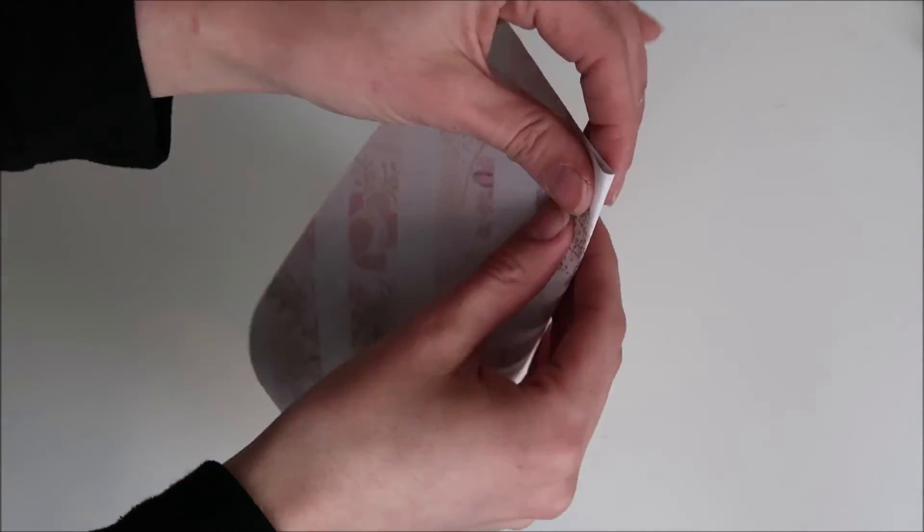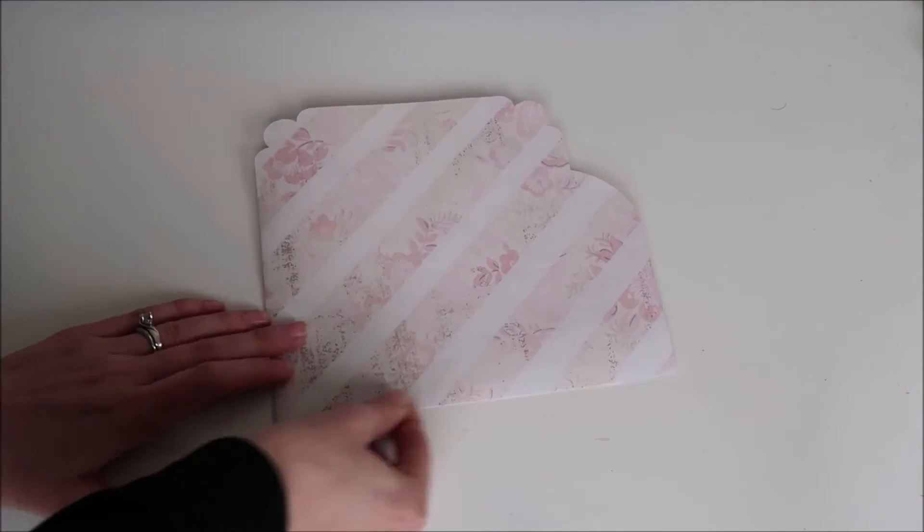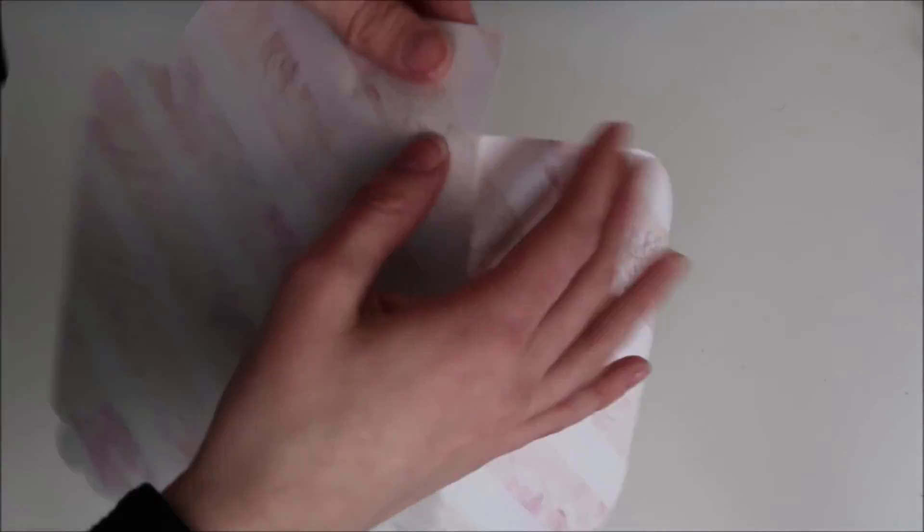Next I take the envelope and fold it at all of the creases that the scoring stylus made. Then I take my glue pen and glue the flaps down.